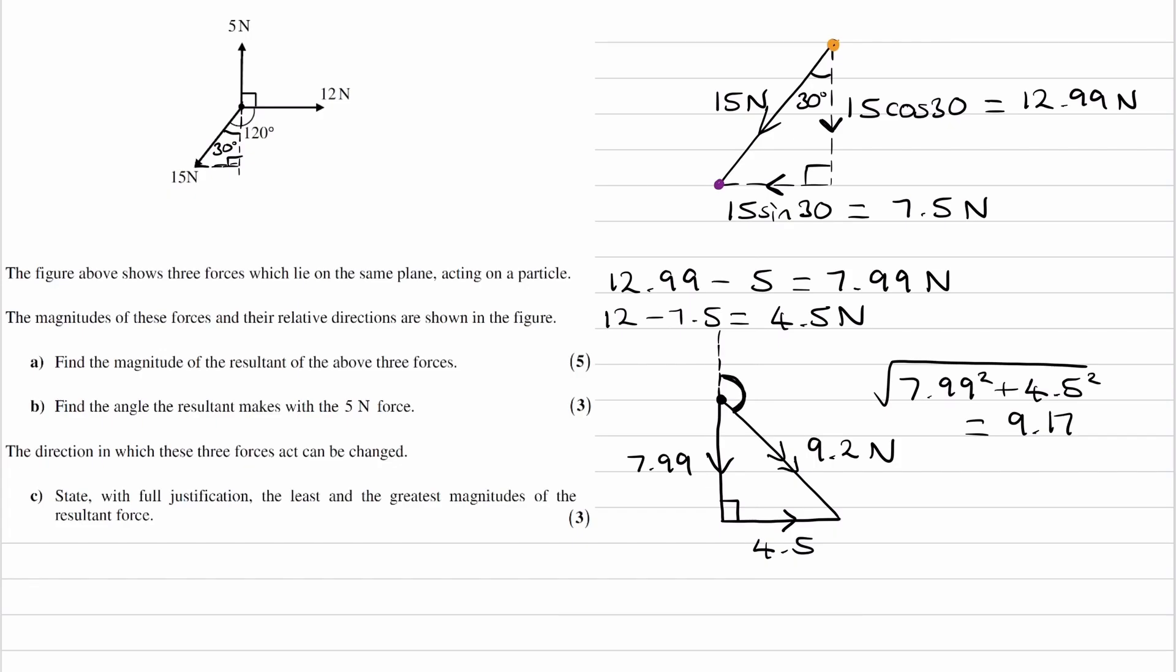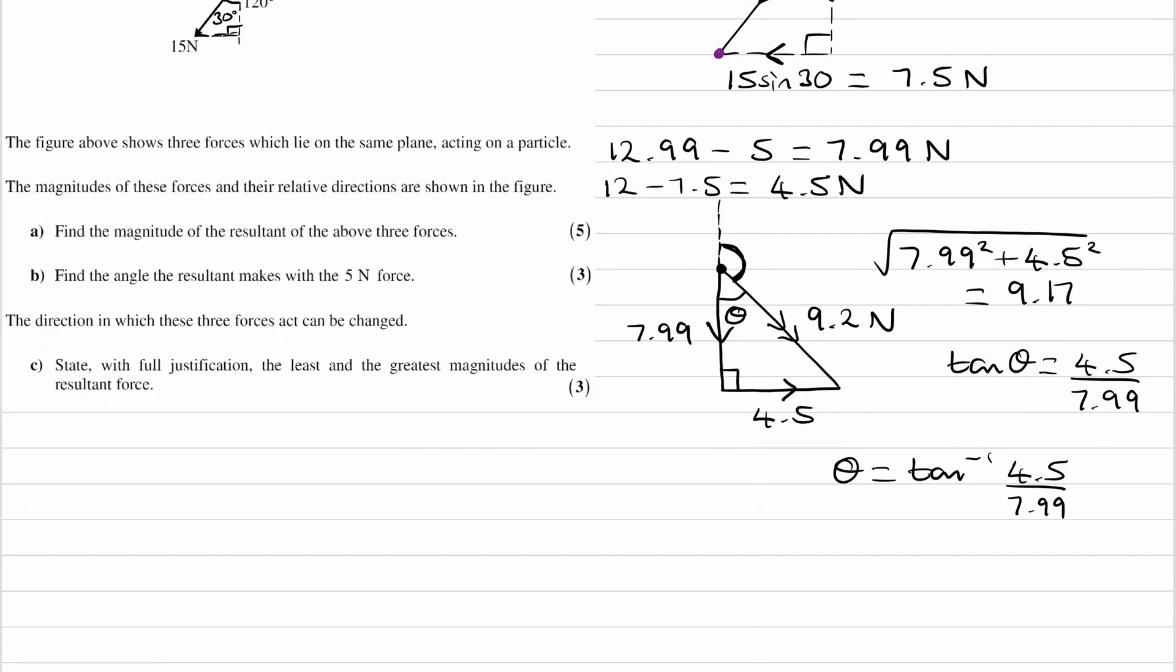So to work that angle out, we have to work out what this angle here is, and we can do that by using tan of theta is equal to opposite over adjacent, or any SOHCAHTOA rule would have worked. Rearrange for theta, and we end up with 29.38, or 29.4 degrees, so that's theta.